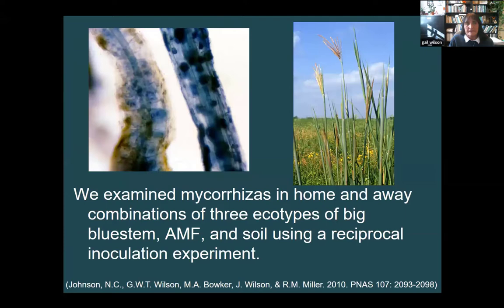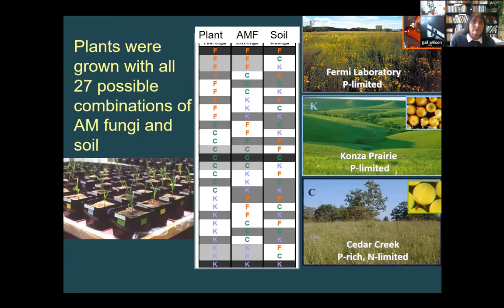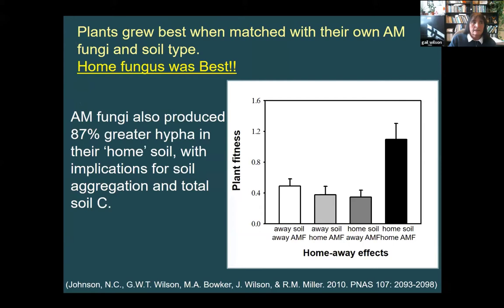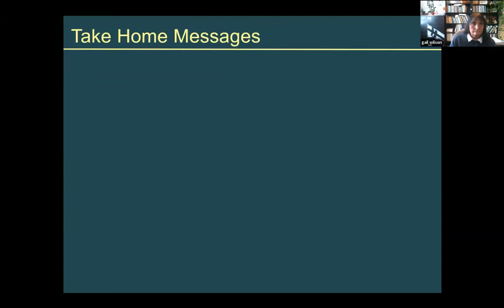Does it really matter — are fungi the same everywhere? We examined mycorrhizal fungi in what we call a home-and-away experiment, where we had three sites: one from Illinois, one from Kansas, and one from Minnesota. We mixed these all up, putting fungi and soil together — considered 'home' if it was Kansas soil, Kansas plants, and Kansas fungi. The plant we used was big bluestem. We found that plants grew best when they were with their own fungi on their own soil — they produced more, and more fungi were produced. So it does seem important to consider where we're getting these fungi from.